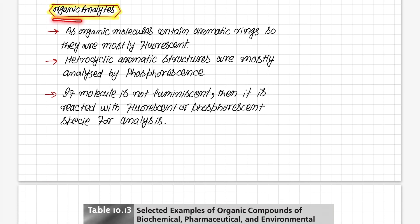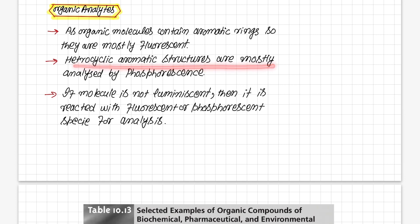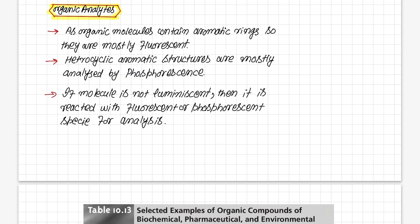Next, if we talk about organic analytes — since organic molecules contain aromatic rings, they are mostly fluorescent. However, if there are heterocyclic aromatic rings, they also show fluorescence. As we have already studied, heterocyclic rings contain heteroatoms like nitrogen, sulfur, and oxygen. These species contain electrons in non-bonding orbitals, and n→π* transitions increase the chances of fluorescence or phosphorescence. So mostly, organic molecules show either fluorescent or phosphorescent behavior.